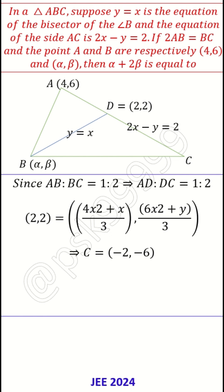Once we know C = (-2,-6), we have two equations. Now, we know that α = β. Why? Because it is lying on the equation y = x. So α = β.